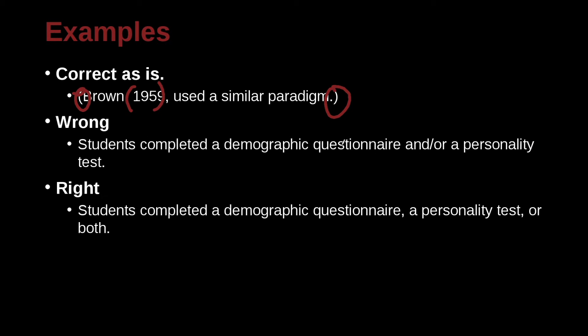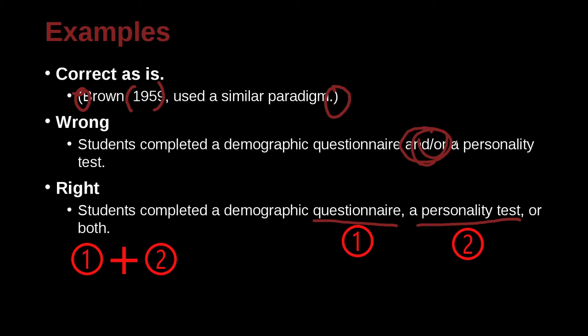Students completed a demographic questionnaire, and or a personality test, and or. So that sounds like they did the questionnaire, and they could have done the questionnaire and the personality test, or they did the questionnaire or personality test. Students completed a demographic questionnaire, a personality test, or both. And this meaning is a little bit different. So here the students completed a demographic questionnaire. That is one thing they did. They also did a personality test, or they did both. So it's a different meaning. Be careful with this, and or slash.